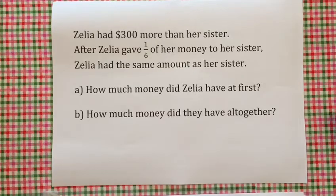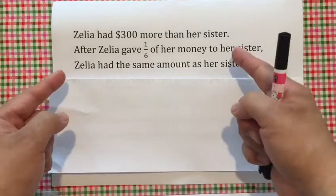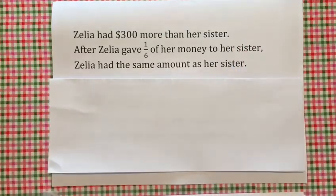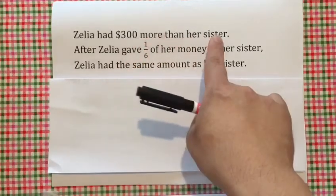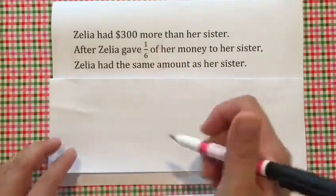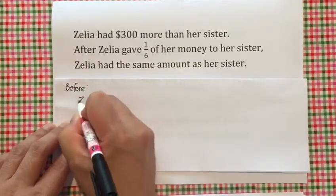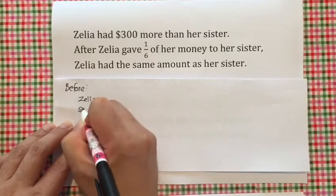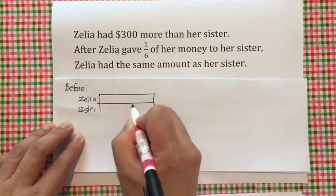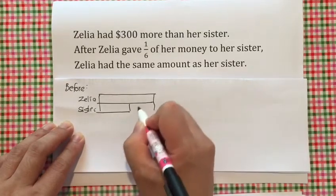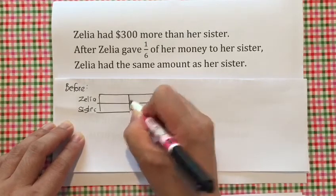Now, we usually do not approach the question right away. We should first look at the problem, read the story, and understand it. Zelia had this amount of money more than her sister before she gave her money away. So, let's do a before model. Zelia and her sister — Zelia had $300 more than her sister.